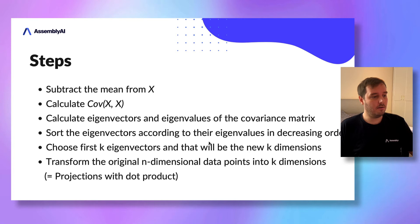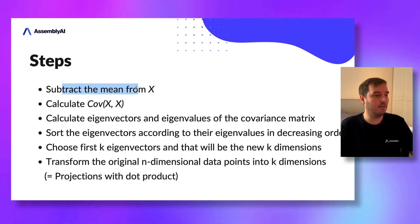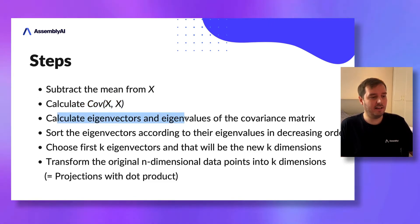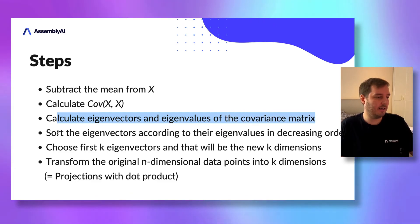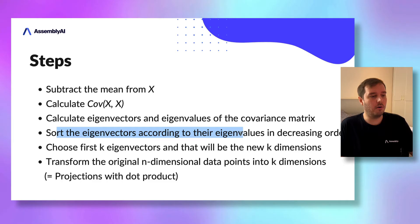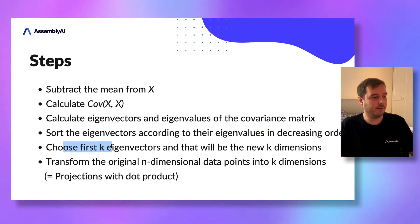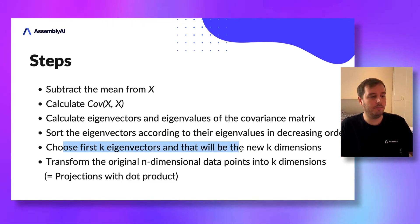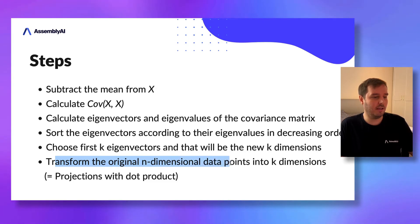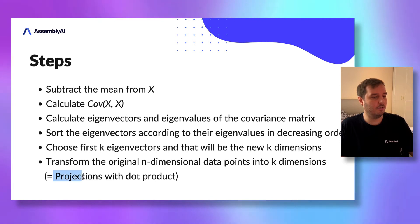The steps we have to do: first, subtract the mean from X; then calculate the covariance of X and X; calculate the eigenvectors and eigenvalues of the covariance matrix; sort the eigenvectors according to their eigenvalues in decreasing order; choose only the first k eigenvectors that will be the new k dimensions; and transform the original n-dimensional data points into k dimensions using projection with the dot product.